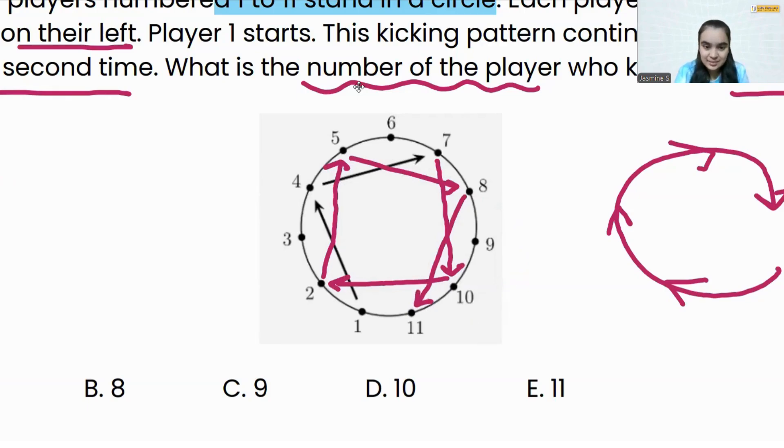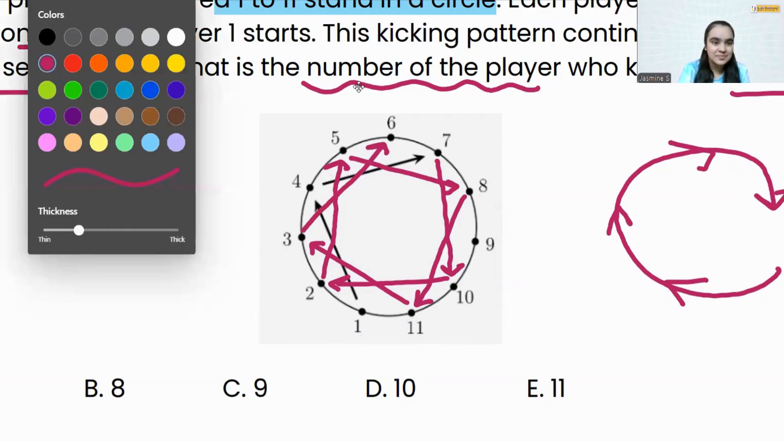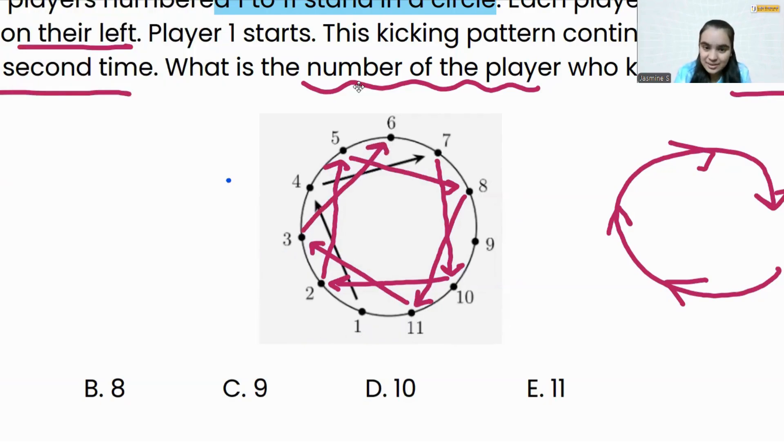That's correct, 1, 2, 3. 3 will kick to number 6. It looks like a star, isn't it? Now the last one, 6 is going to kick to number 9, three steps to the left of 6, right?